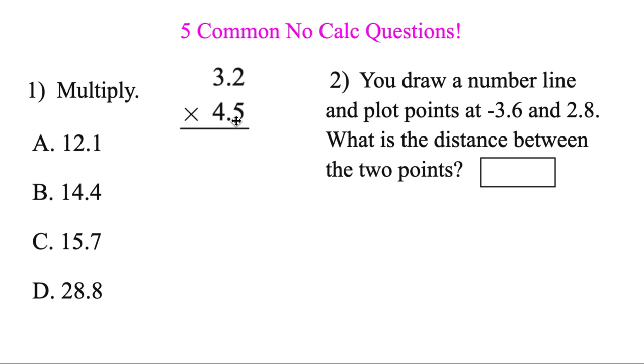When you're multiplying with decimals, you can always start on the bottom right. 5 times 2 is 10, carry the 1. 5 times 3 is 15, plus 1 is 16.